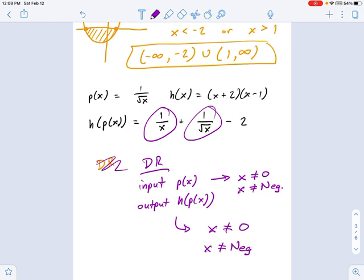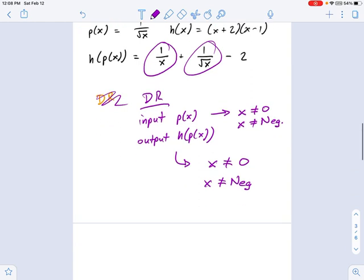And it also can't be zero. So, I have four domain restrictions here, but they're overlapping, right? They're duplicate domain restrictions. So, all that means is you have one of these situations again, where you can't have zero, you can't have negatives, so all you have left is positive numbers.